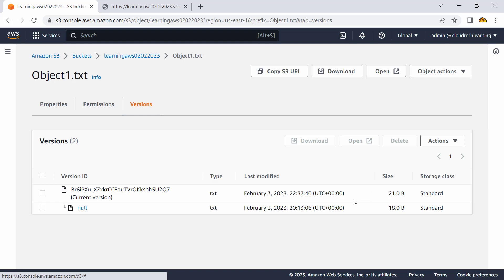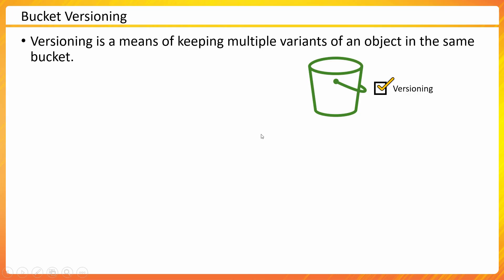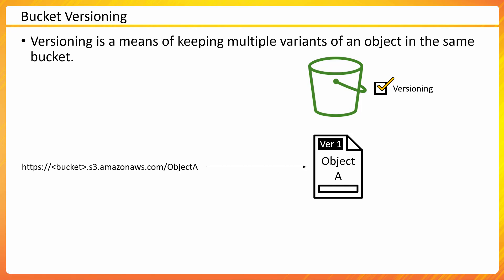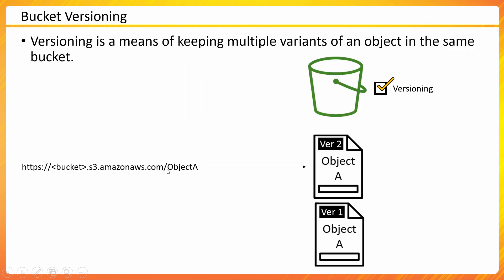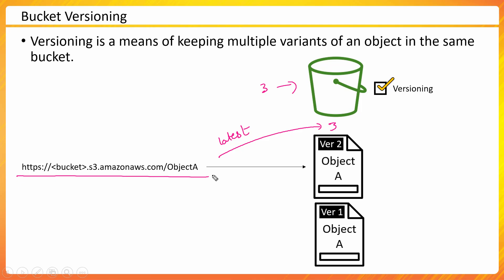What is happening behind the scenes: once I enabled versioning, my bucket had this object, and accessing it via the standard URL was pointing to version 1. But as soon as I put version 2 into the bucket, the URL starts pointing to the latest version. If I push version 3 inside the bucket, it will keep version 1, version 2, and the URL will start pointing to version 3. So the URL automatically points to the latest version, and anyone accessing it directly will get the latest version.